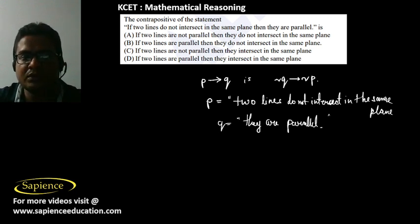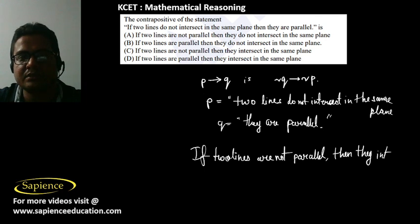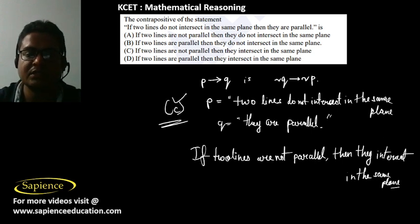So not Q means 'two lines are not parallel', and not P means 'they intersect in the same plane.' Therefore the contrapositive is: if two lines are not parallel, then they intersect in the same plane.